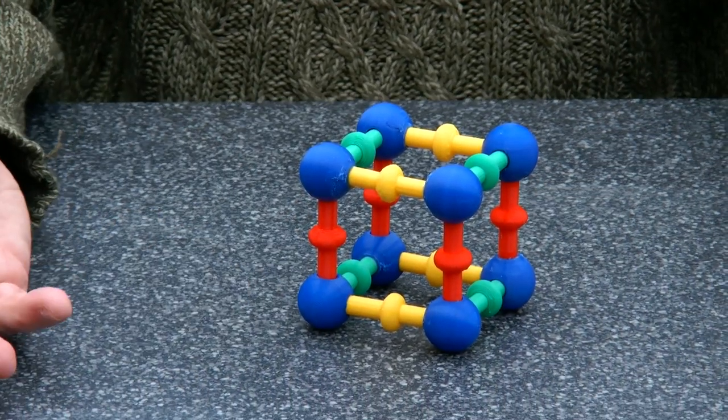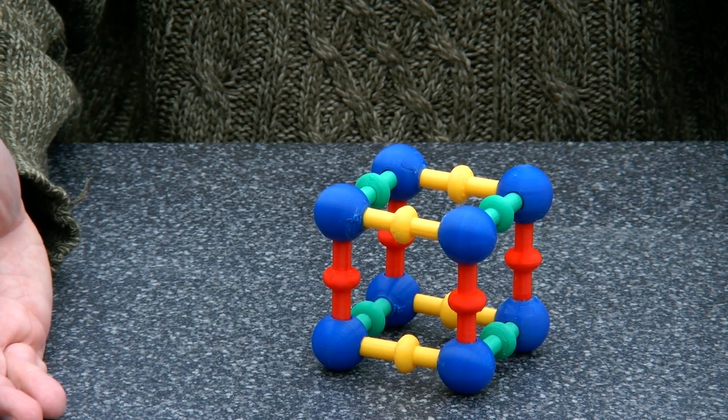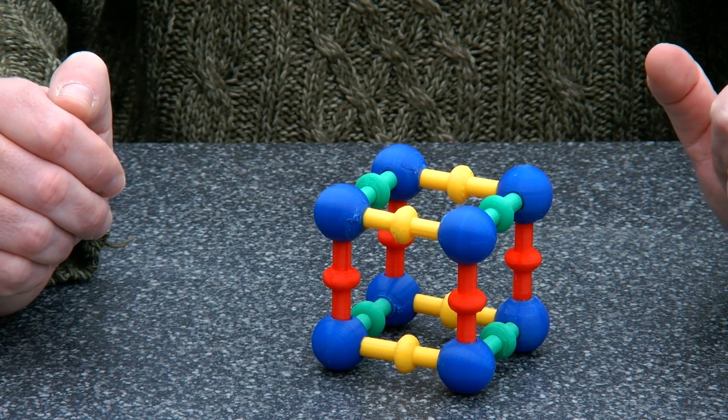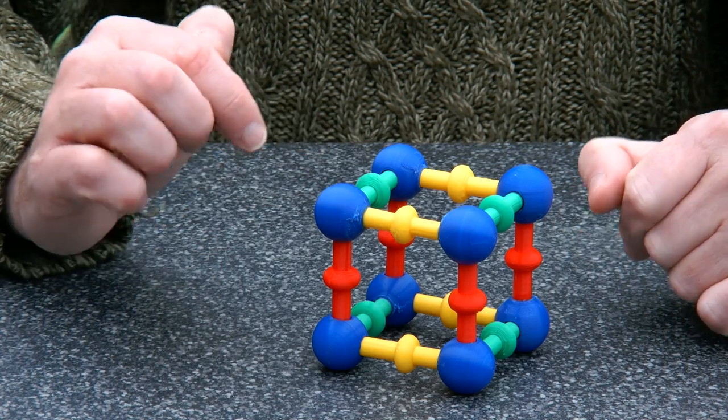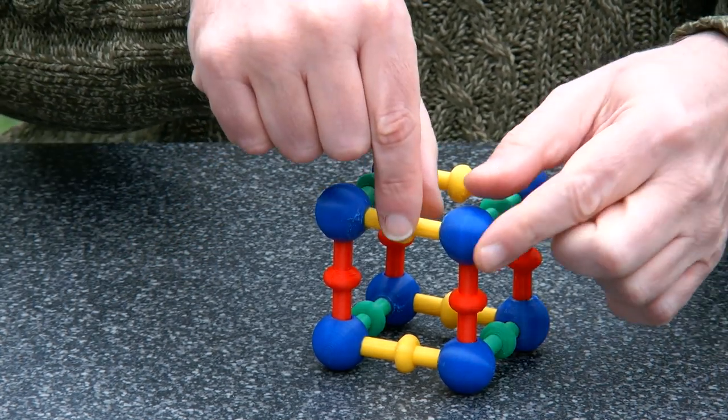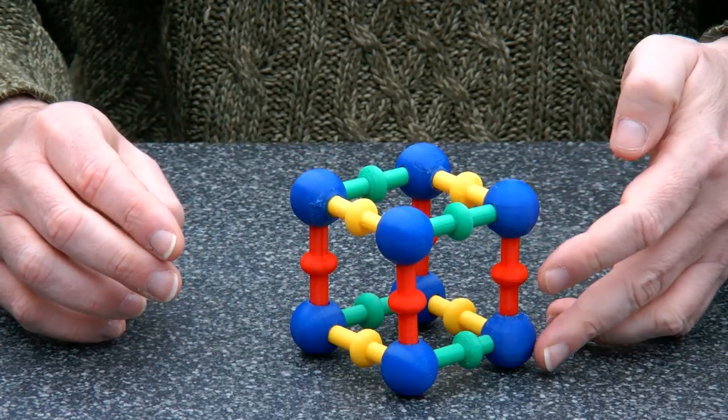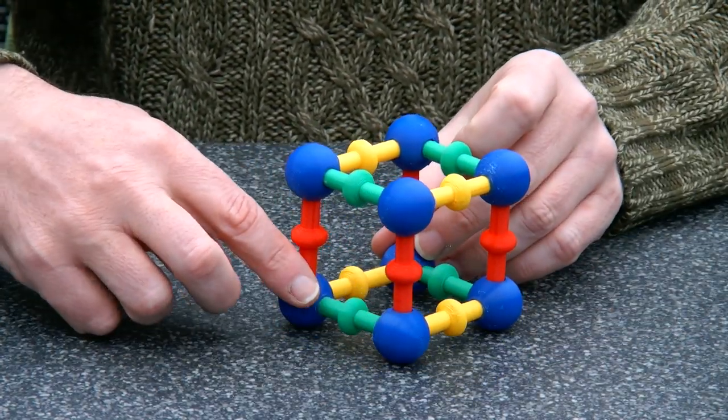The object of the puzzle is of course to take it apart and put it back together. The way that it works is first of all some of the rods are glued in. So this rod is glued to the balls. This one red one here as well and the green one here too.